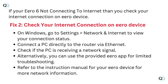Fix 2: Check your internet connection on the Eero device. On Windows, go to Settings and Network and Internet to view your connection status. Connect a PC directly to the router via Ethernet. Check if the PC is receiving a network signal. Alternatively, you can use the provided Eero app for limited troubleshooting. Refer to the instruction manual for your Eero device for more network information.